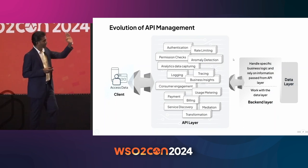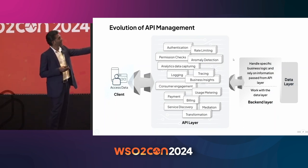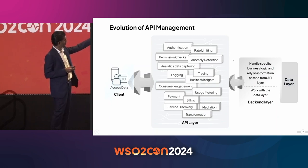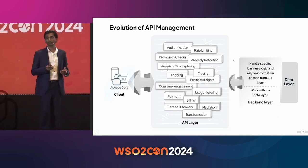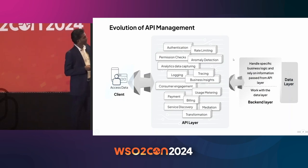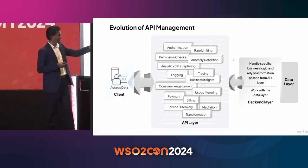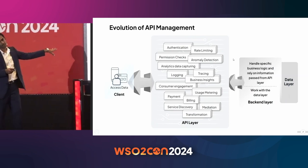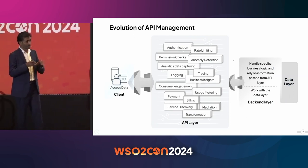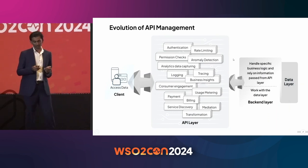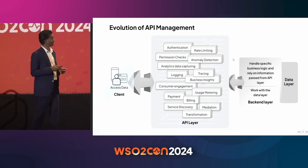The API management layer became more feature-rich. Capabilities from the backend layer, from load balancers and firewalls between client and backend, and even from the integration layer, all came into the API management layer. I'm trying to explain all these things and how they relate to governance and why governance is important.